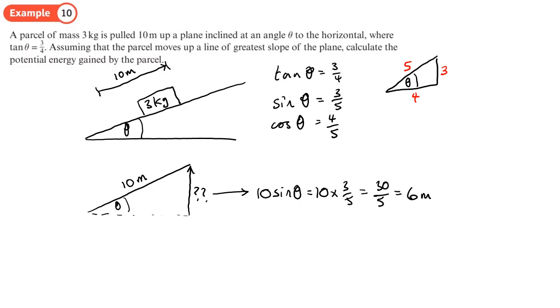That's just mgh again, so 3g times h which is 6, giving 18g joules. Or as a decimal, 18 times 9.8 gives 176.4 joules.